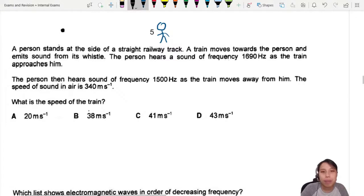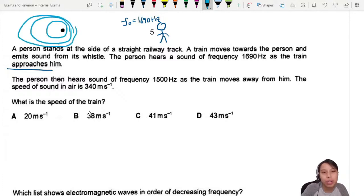The person will hear a frequency of 1690 Hz when the train approaches him. So you observe 1690 Hz. Is that the original sound? No, the train is moving towards you, so the wave that comes out will be kind of squashed like that as it moves towards you with a certain speed of source.